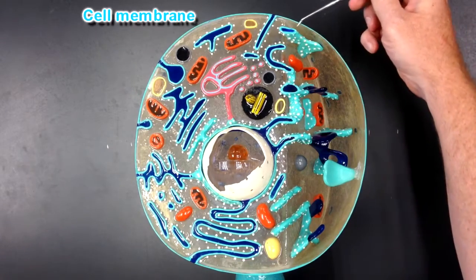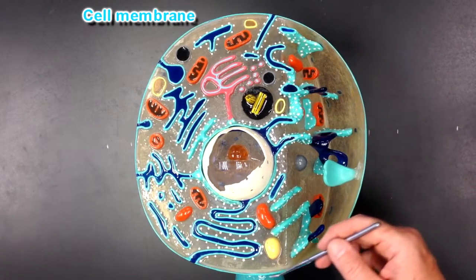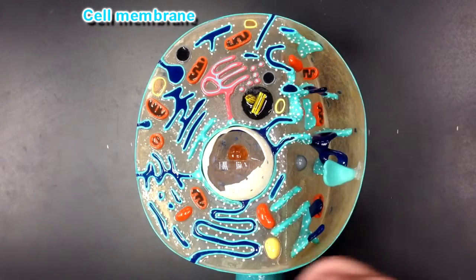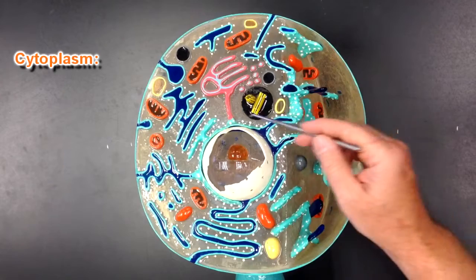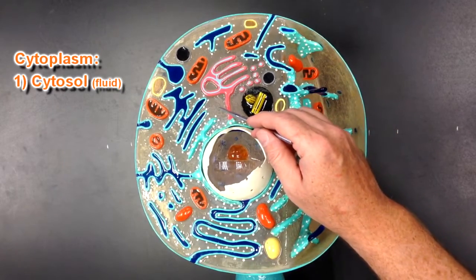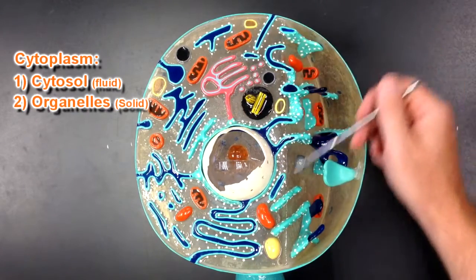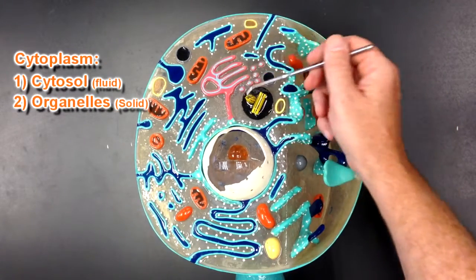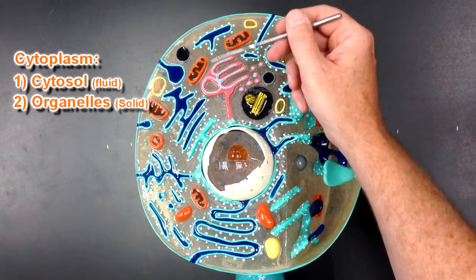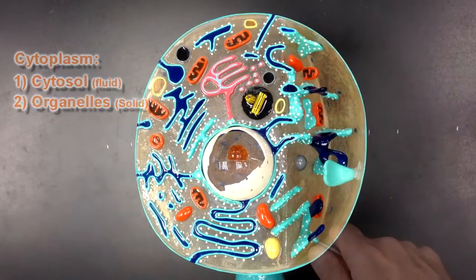The cell membrane is located out here and the cell membrane contains all of the cytoplasm in here. The cytoplasm happens to be the cytosol, the fluid portion, and the solid portions. All of these organelles inside here, organelles like the mitochondria and the Golgi apparatus, rough ER, and so on.